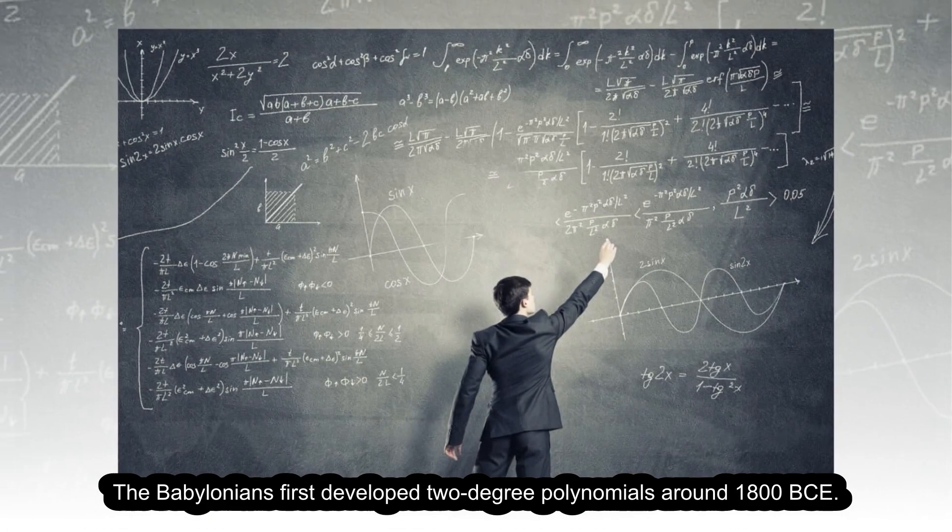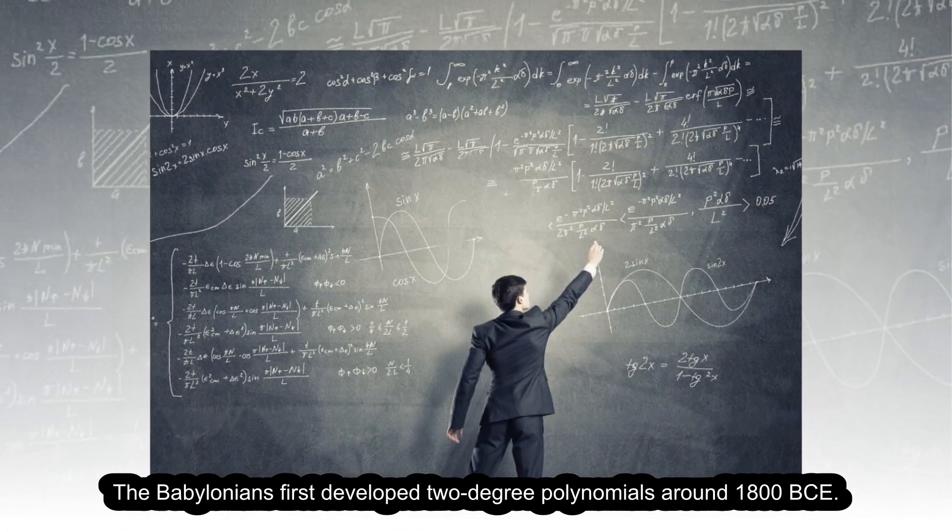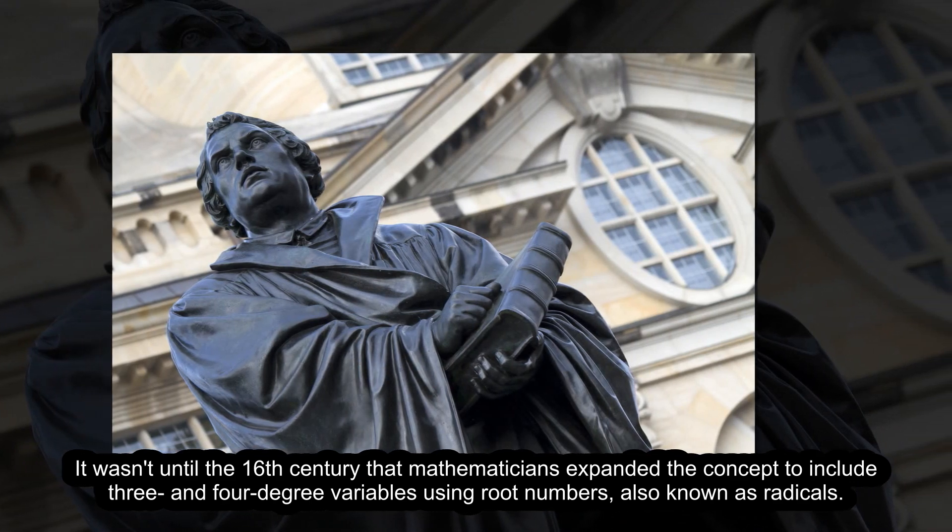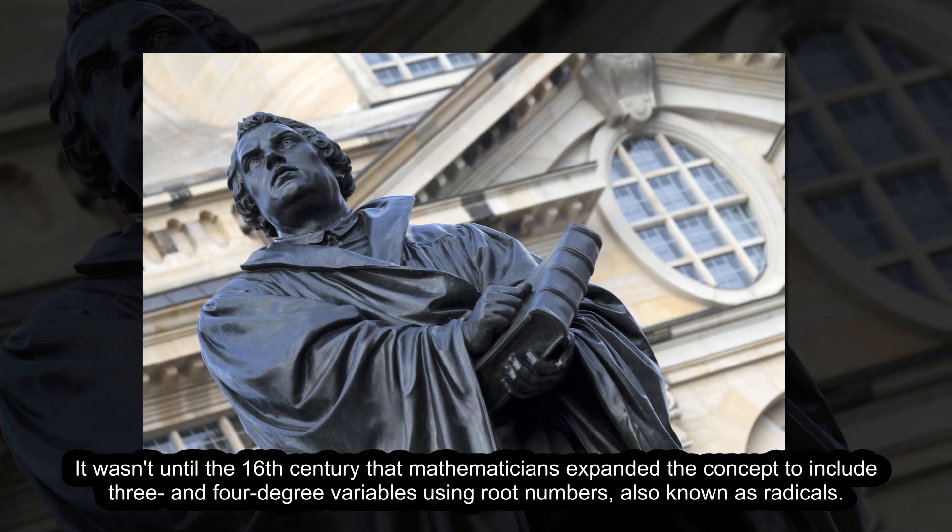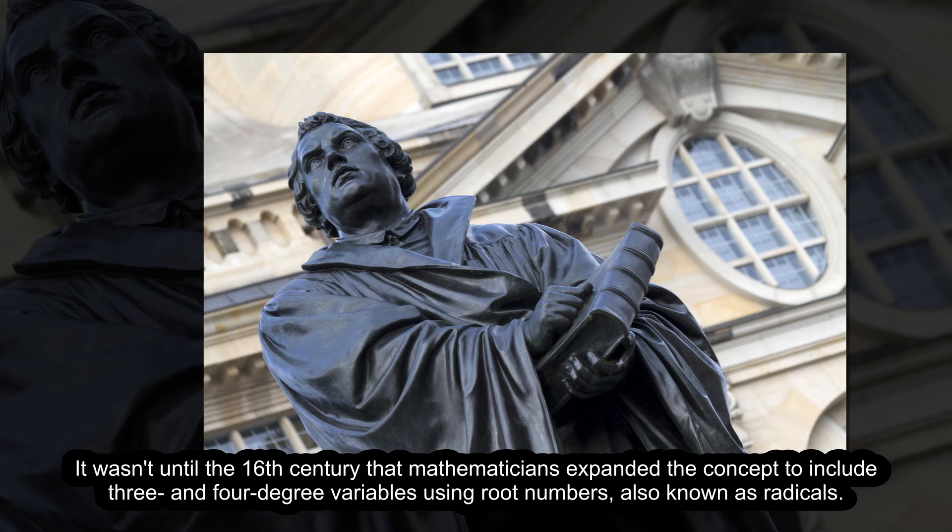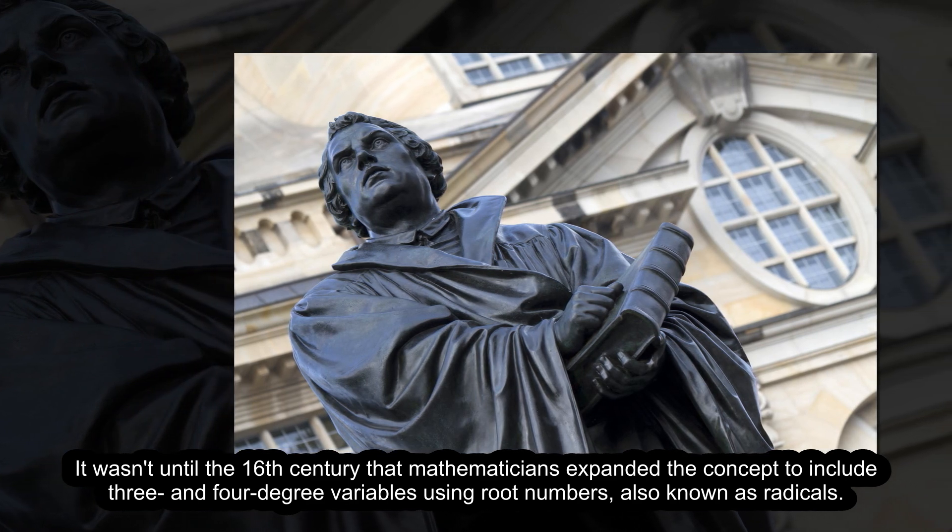The Babylonians first developed two-degree polynomials around 1800 BCE. It wasn't until the 16th century that mathematicians expanded the concept to include three and four-degree variables using root numbers, also known as radicals.